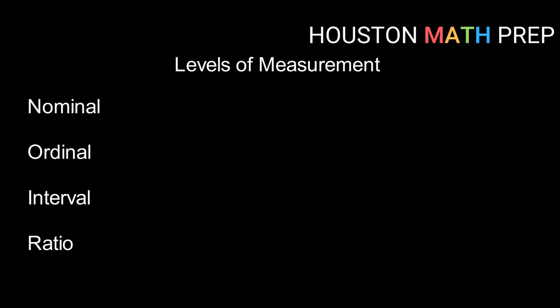Hey guys, Houston Math Prep here. In this video we're going to look at levels of measurement when it comes to statistical data. There are four levels of measurement. We call them nominal, ordinal, interval, and ratio. I use the acronym NOIR, N-O-I-R, not only to remember the four but to remember their order.